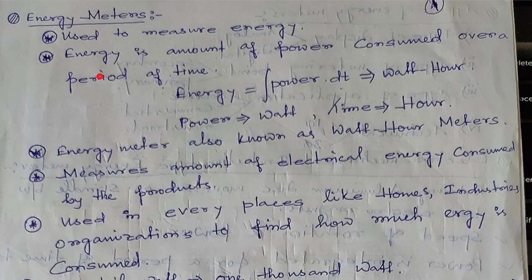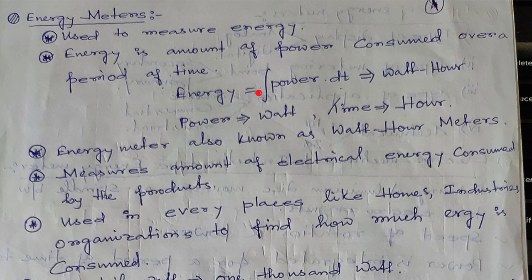What is energy? Energy is the amount of power consumed over a period of time. Over a period of time, jitna power consume hoga, usko hum bolenge energy.